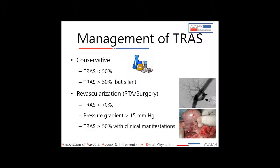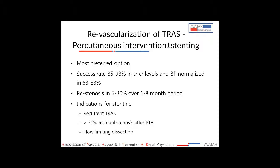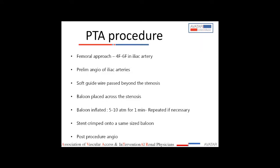Management can be divided into conservative, PTA, or surgery. Conservative management has a role when stenosis is less than 50%, or clinically silent between 50 to 75%. Revascularization is indicated when stenosis is more than 70%, pressure gradient exceeds 15 mmHg, or stenosis is more than 50% with clinical manifestations. A retrospective study comparing 34 TRAS patients (stenosis >50% but asymptomatic) with 34 non-TRAS transplant patients over three years showed stenotic group had gradually decreasing peak systolic velocities on follow-up, indicating some spontaneous resolution.